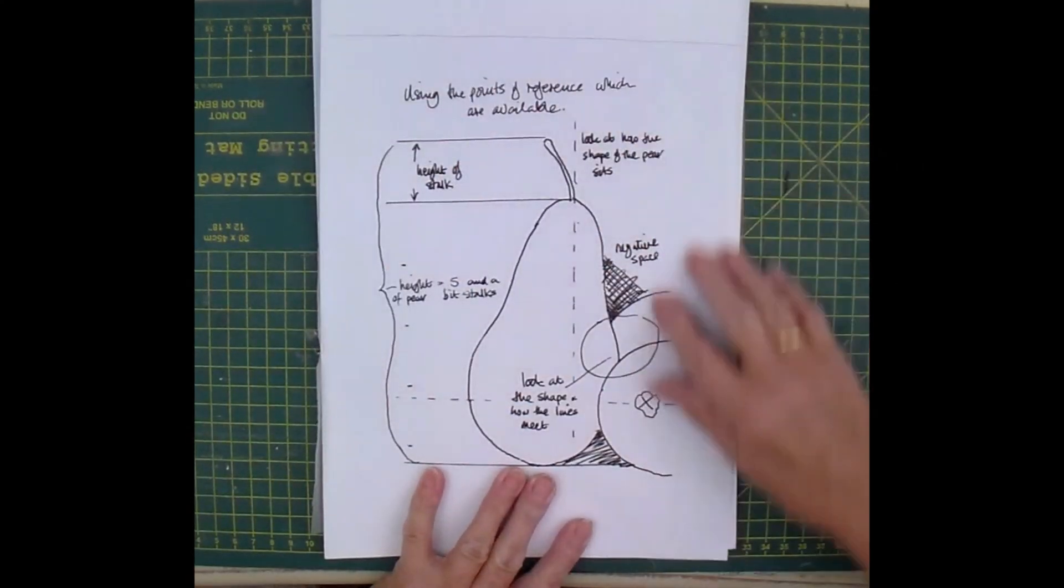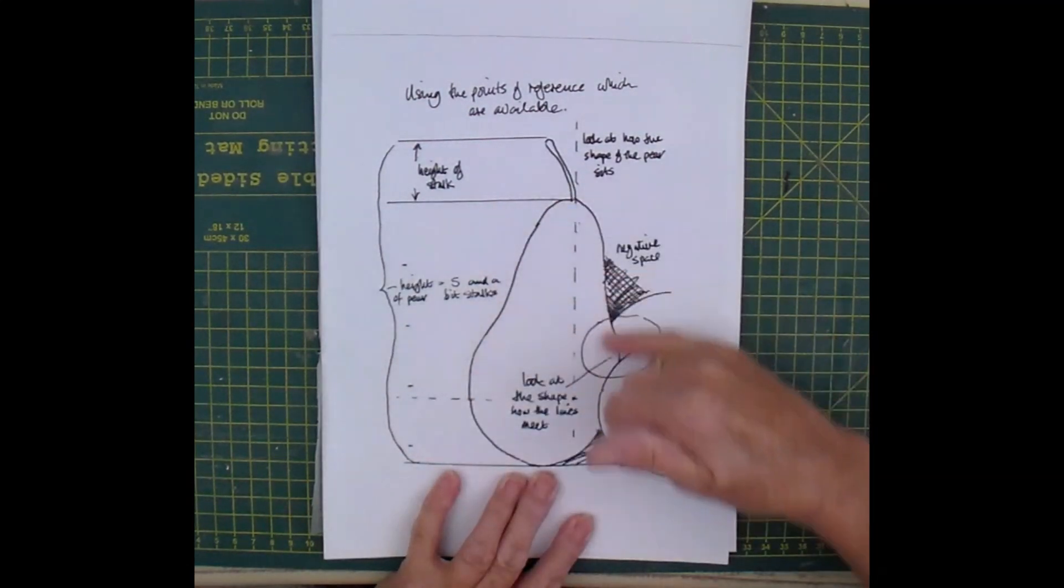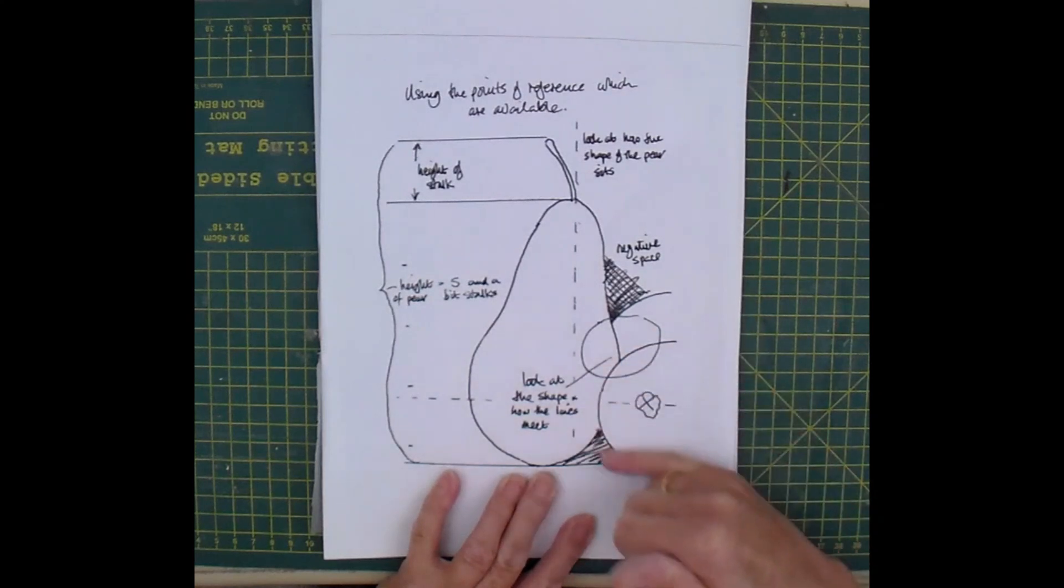This was from another still life painting, but what we had here was a pear. There was another pear there that was on its side, so that's the piece at the bottom of the core.